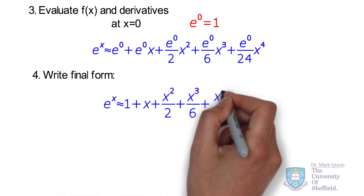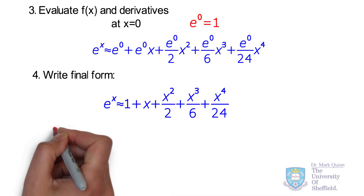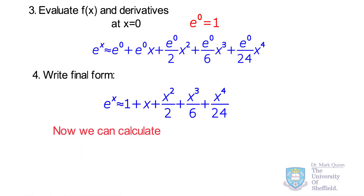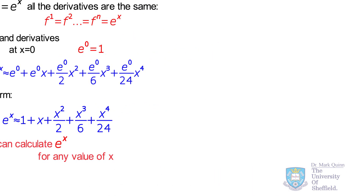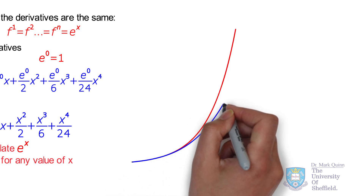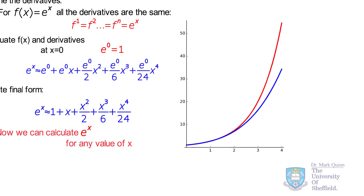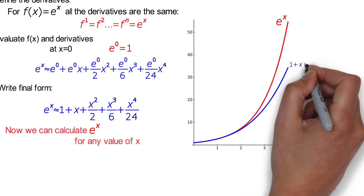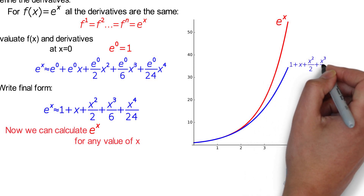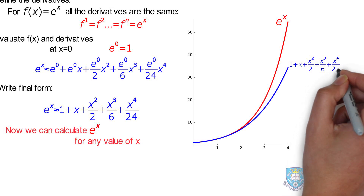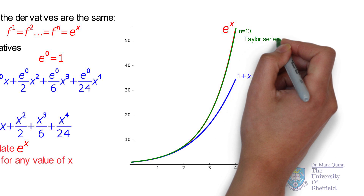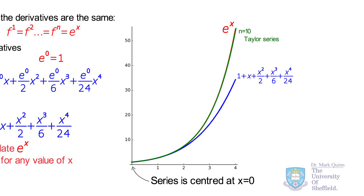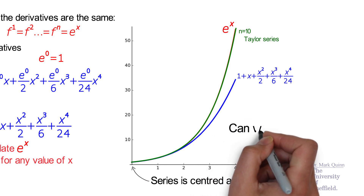Using this series we can calculate e to the x for any value of x we like. Visualizing this, we compare the real function e^x with our simple approximation comprising 5 terms. We can see that the approximation is accurate up until x equal to 2, after which it starts to diverge. If we increase to 10 terms of the Taylor series the approximation becomes more and more accurate. We can also note that the series is centered at x equal to 0.